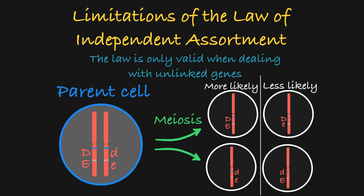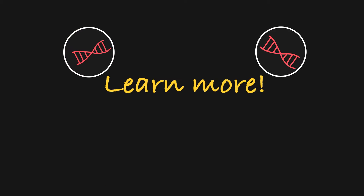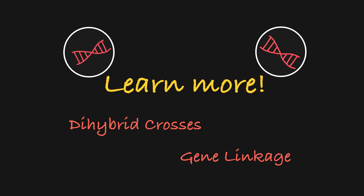When Mendel derived the Law of Independent Assortment, he had no notion of the idea of chromosomes, and he was lucky that the traits he selected to study were not linked. That's all you need to know about Mendel's Law of Independent Assortment. See my videos on dihybrid crosses or gene linkage to learn more.